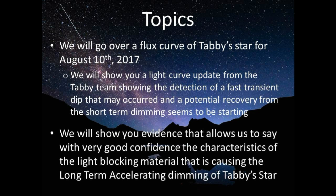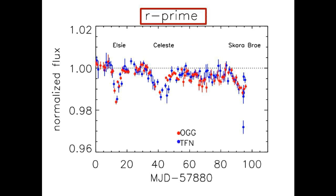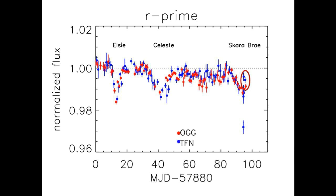A potential recovery from the short-term dimming seems to be starting. We will also show you evidence that allows us to say with very good confidence the characteristics of the light blocking material causing the long-term accelerating dimming of Tabby's Star. This light curve from Tabby's team was taken in the R band, and this is the fast dip that occurred the night before last, detected from two different telescopes. The weird shape and huge size of whatever did this is remarkable, and circled in red are the latest three data points showing signs of a potential recovery.